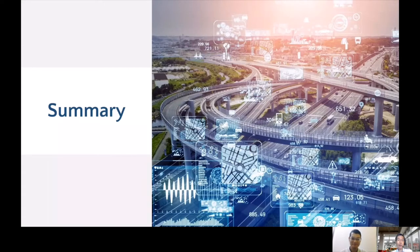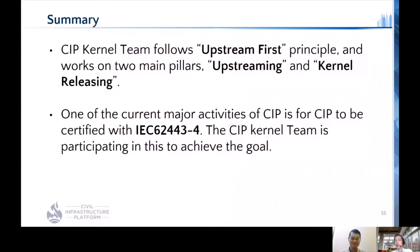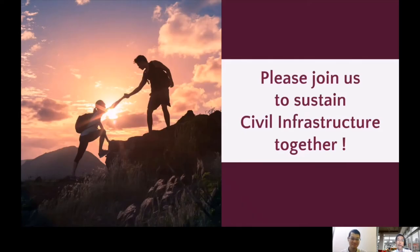Let's wrap up today's talk. By following the upstream-first principle, the CIP kernel team works on two main pillars — upstreaming and kernel releasing. Because one of the current major activities of CIP is to achieve IEC 62443-4 certification, the CIP kernel team is participating in this as well to achieve and sustain industrial greatness. We are eager to recruit new members — if more people work with us, we can expand activities and contribute more to upstream and other projects so that the whole ecosystem will grow. Please join us if you're interested in CIP.